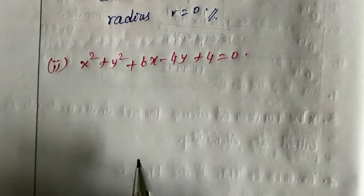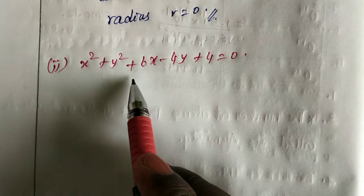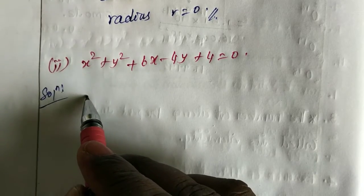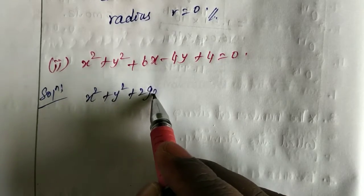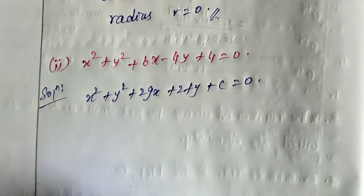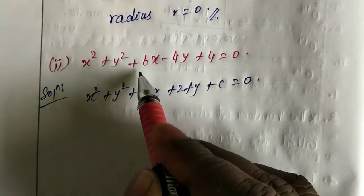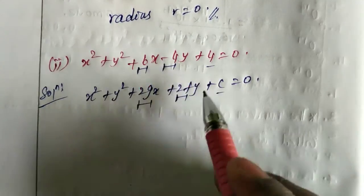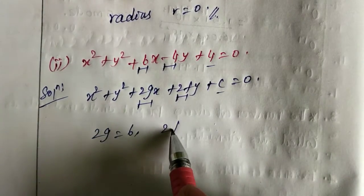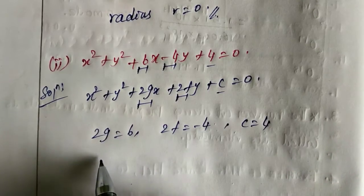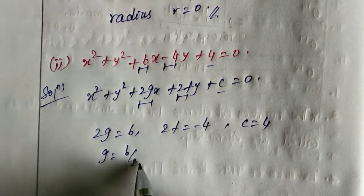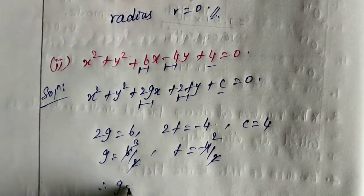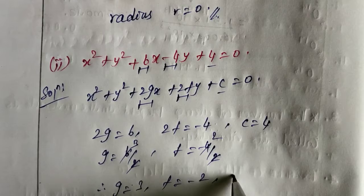Now going into second subdivision. Given: x squared plus y squared plus 6x minus 4y plus 4 equal to 0. This is of the form x squared plus y squared plus 2gx plus 2fy plus c equal to 0. Comparing: 2g equals the x coefficient which is 6, 2f equals the y coefficient which is minus 4, and constant c equals 4. So g equals 6 by 2 equals 3, and f equals minus 4 by 2 equals minus 2, and c equals 4.